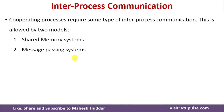There are mainly two kinds of Inter-Process Communication in Operating System. One is known as Shared Memory System and another one is known as Message Passing System. We will try to understand each of these methods in detail one by one.